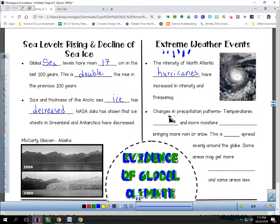Changes in precipitation patterns. Temperatures rise and more moisture evaporates. If the temperatures are increasing, and like we saw in our graph, if the temperatures are rising, then it's going to heat up the water in the ocean. More moisture is going to evaporate. That brings in more rain than snow. And this is not spread evenly around the globe. Some areas may get more precipitation and some may get less.